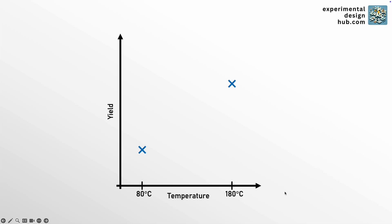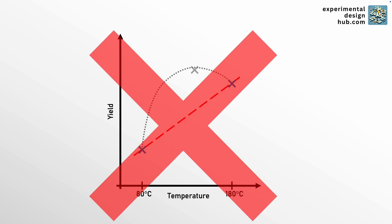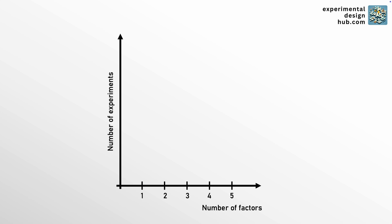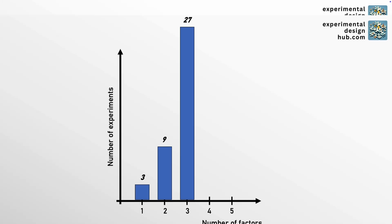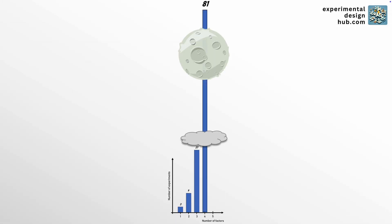Two-level full factorial designs are common, but you will not be able to fit quadratic response surfaces to find optimum conditions like the maximum yield of a chemical reaction process. You would need a three-level design, but those require an awful amount of experiments, making them quite costly and time-consuming.